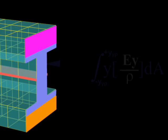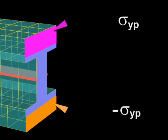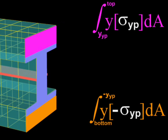In the plastic regions of the section, where stress equals plus or minus the yield stress, the moment contributed by these areas equals the integral of y times the positive or negative yield stress times dA.